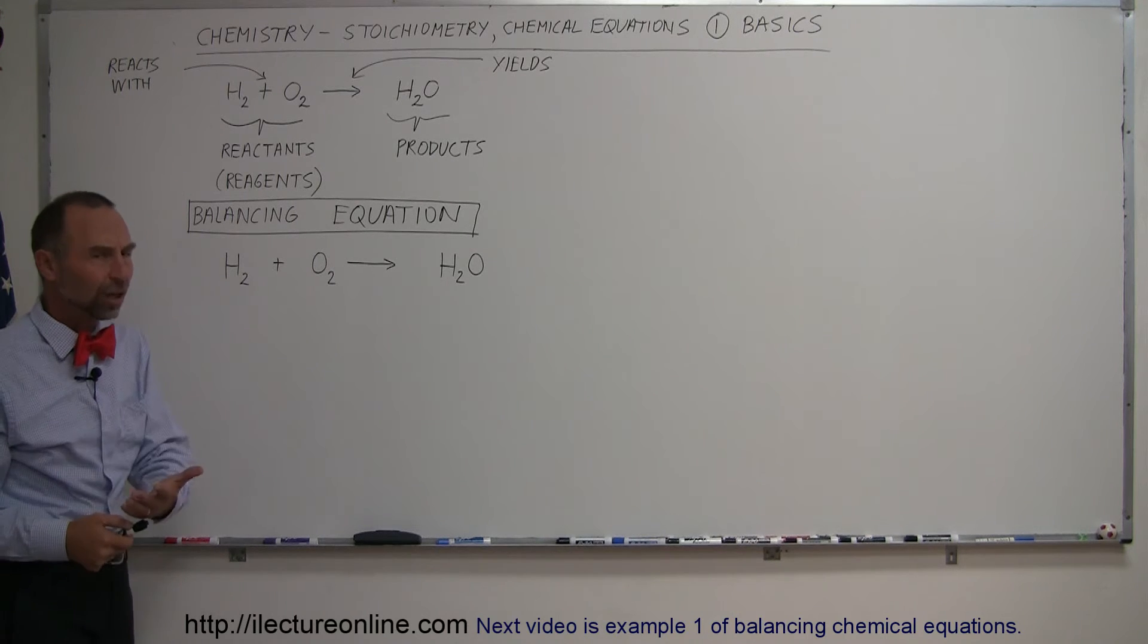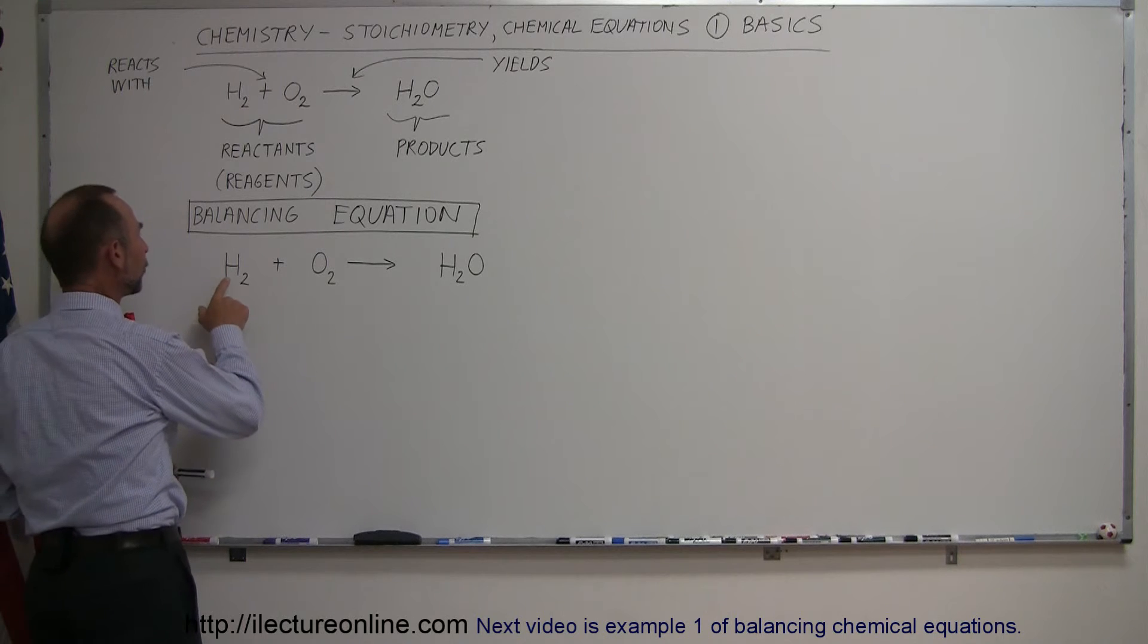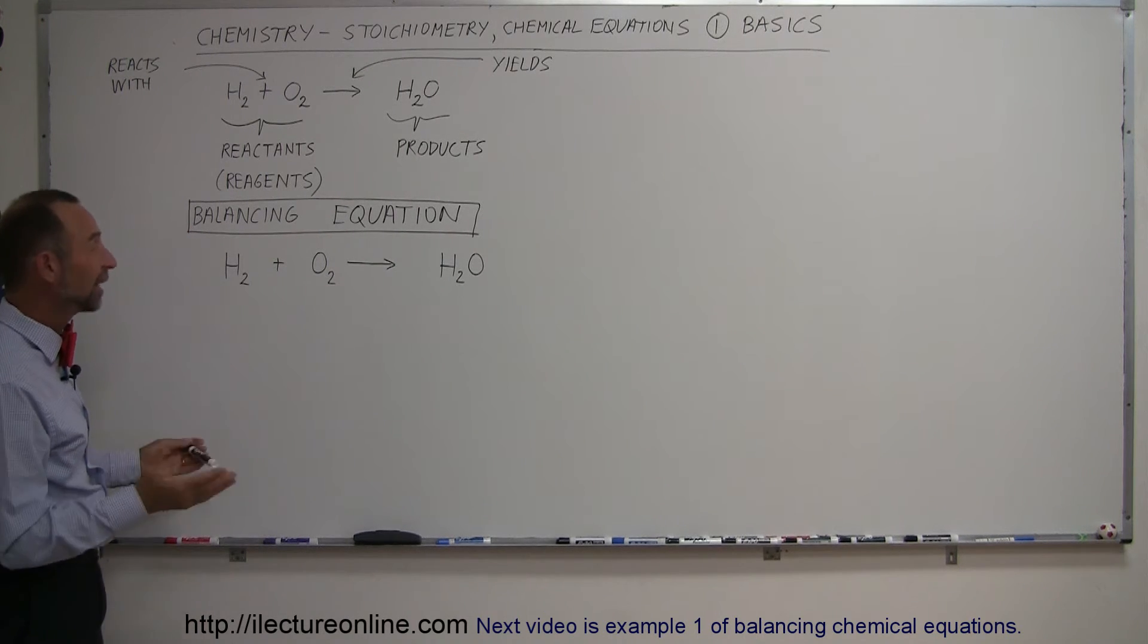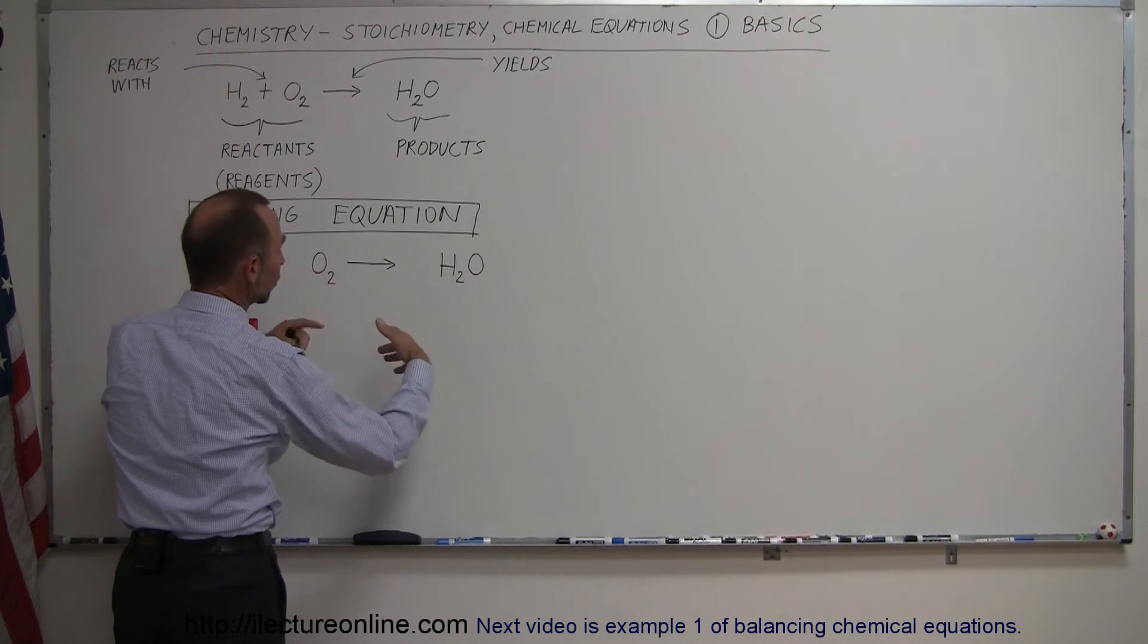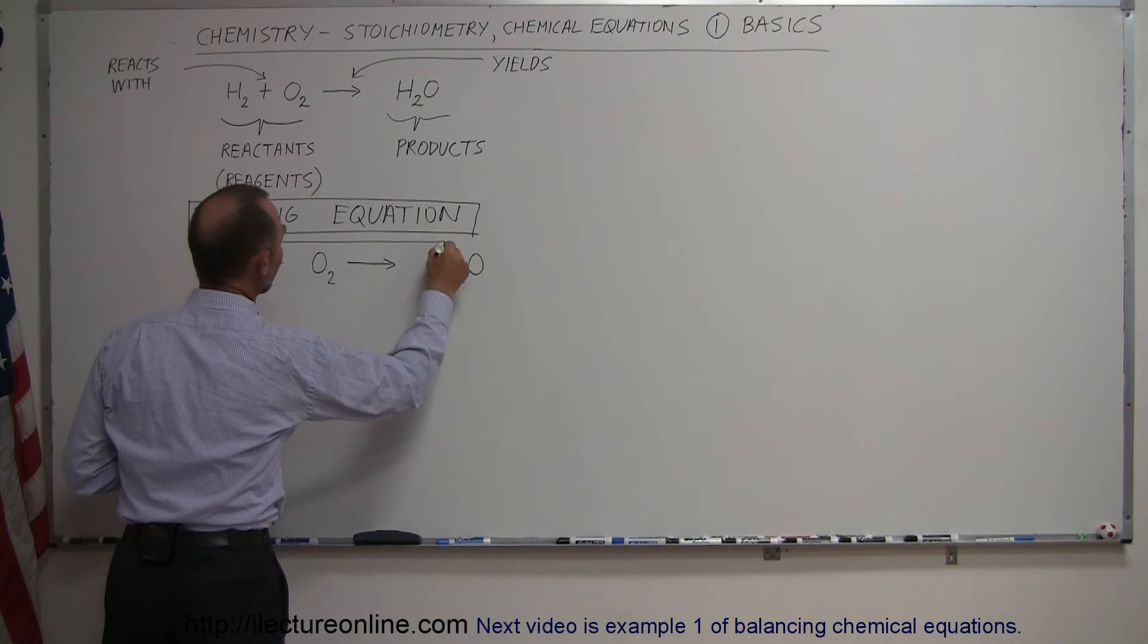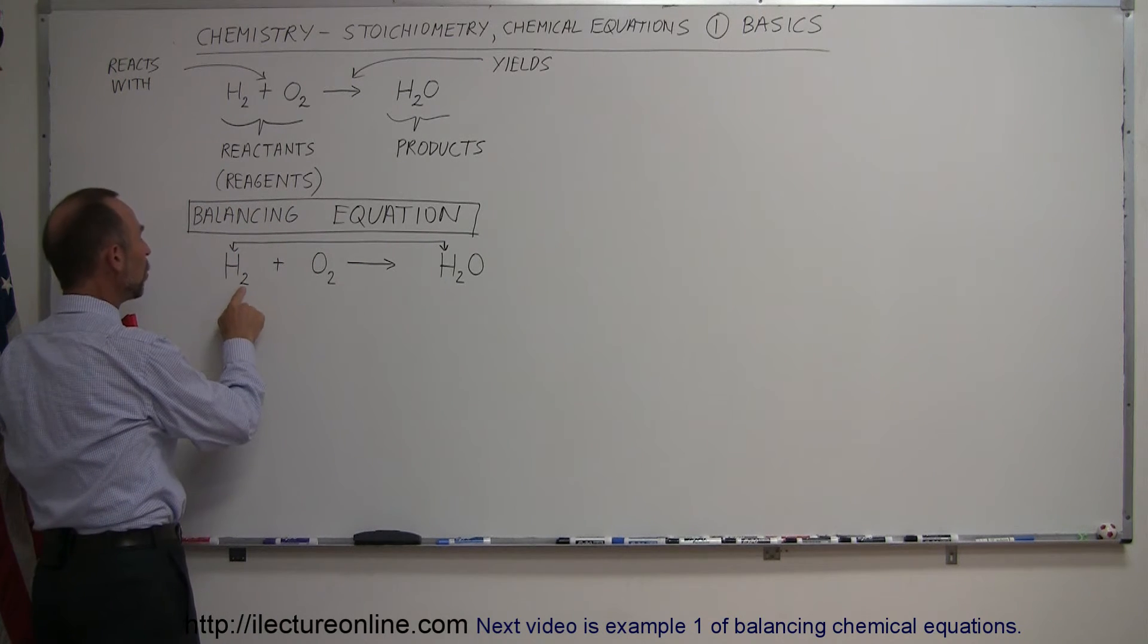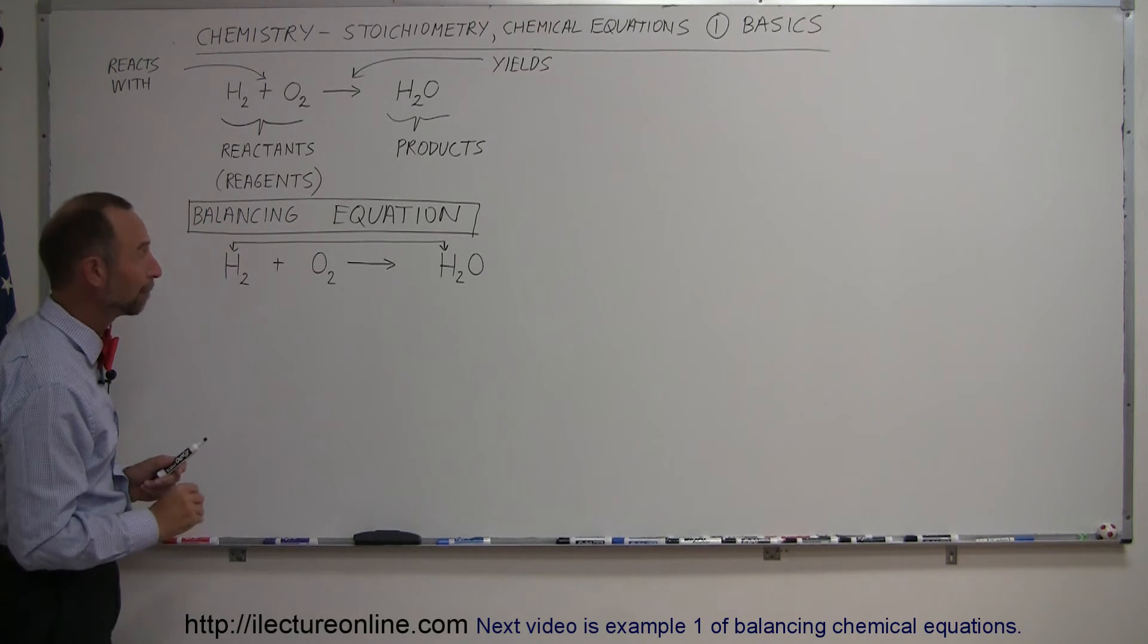And how do we do that? Well, there's a special technique to that. The first thing you do is typically go to your first element, or the element that only appears once on each side of the equation. Now in this case, hydrogen only appears once, and oxygen only appears once, so you can actually start with either one. So let's start with hydrogen. Let's draw a little block arrow like that, and notice that the hydrogens are balanced. You have two moles of hydrogen here and two moles of hydrogen there, so hydrogen is balanced, we don't have to worry about that.